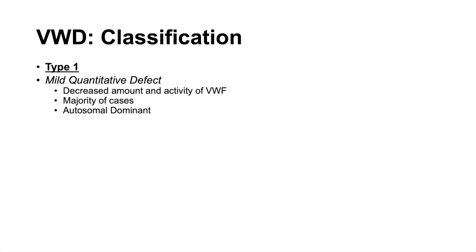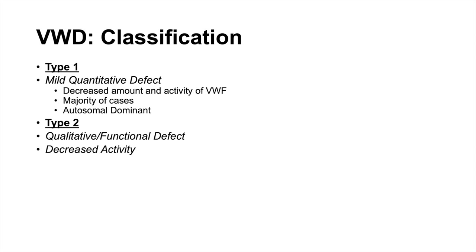Type 2 has several subtypes and is generally a qualitative or functional defect — von Willebrand factor is present but has decreased activity or function. Type 2a is impaired multimerization, where the factor doesn't multimerize well, impairing platelet aggregation and adhesion since larger multimers are most responsible for those functions. Type 2b is hyperfunctional platelet binding — it binds too much to platelets.